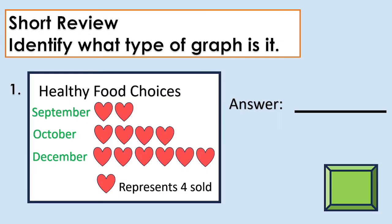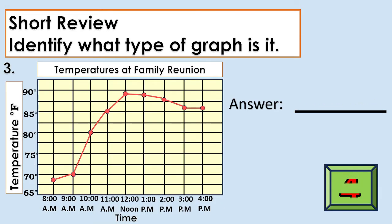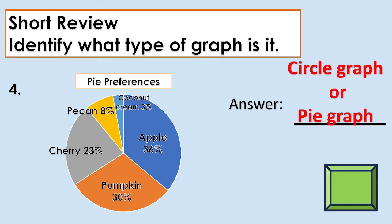Day 1. Short review. Identify what type of graph is it. Number 1, the answer is pictograph. Number 2, the answer is bar graph. Number 3, line graph. Number 4, circle graph or pie graph.